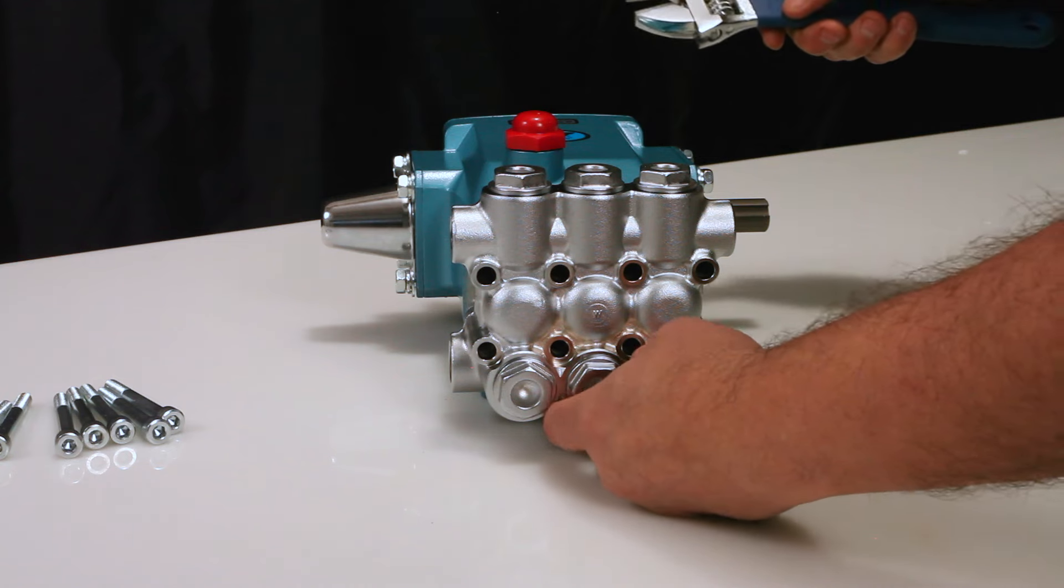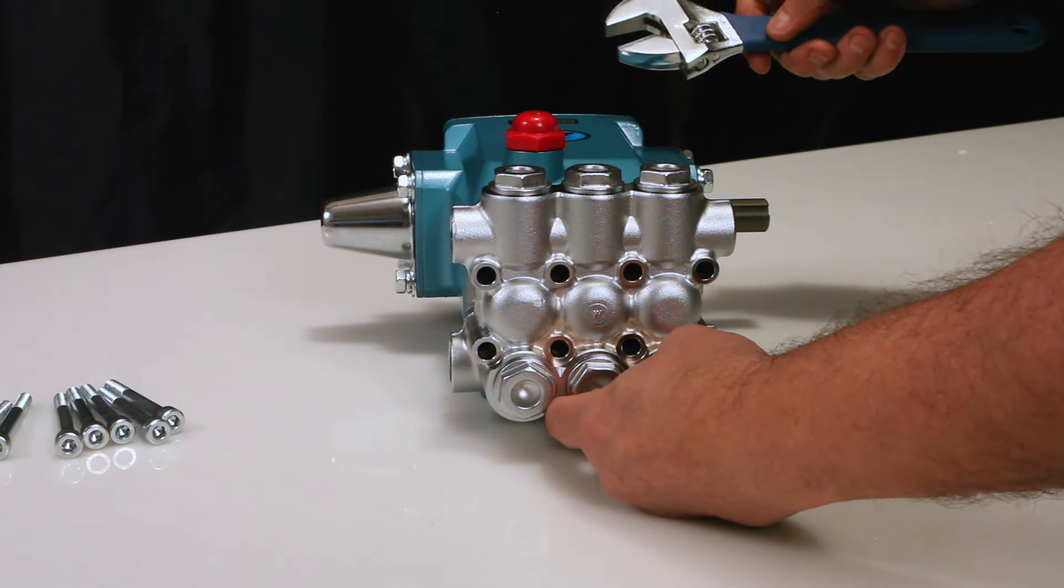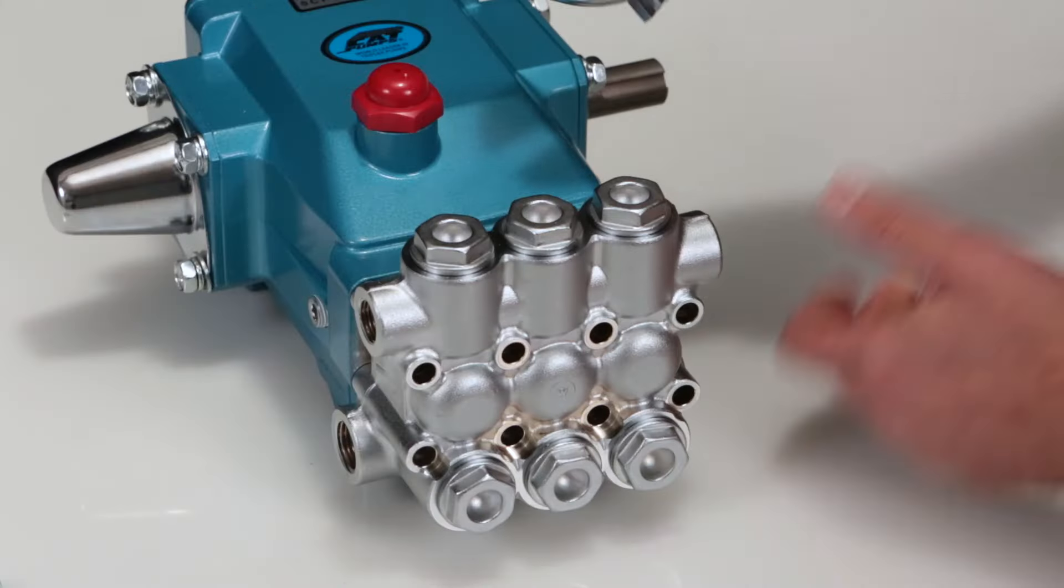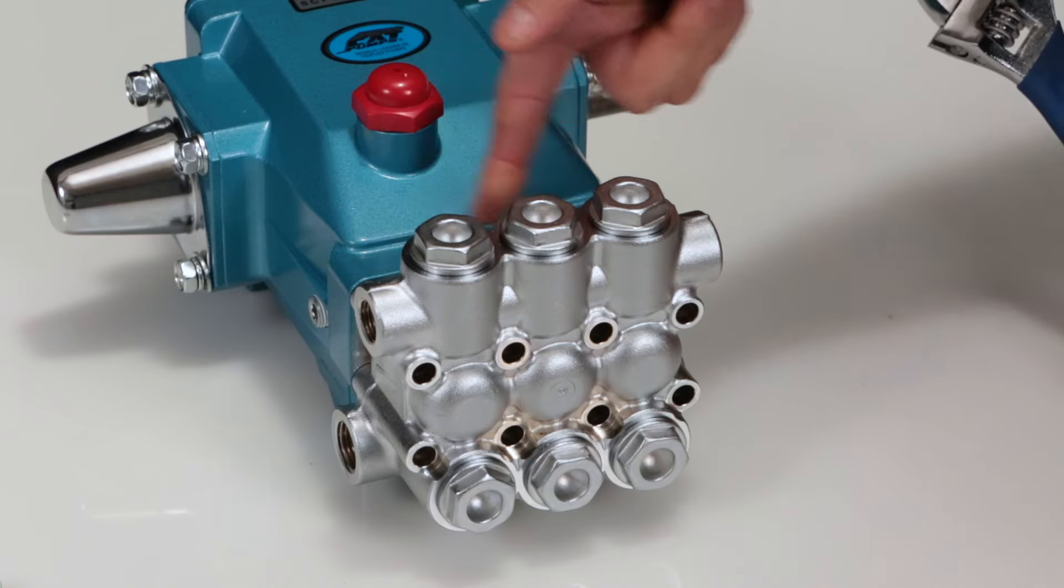To create separation between the manifold and crankcase, rotate the crankshaft until there is a gap between the manifold and crankcase.